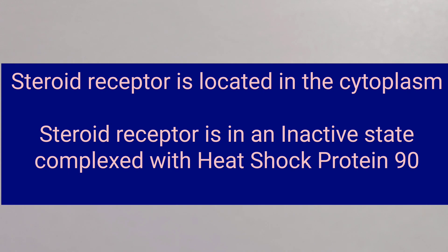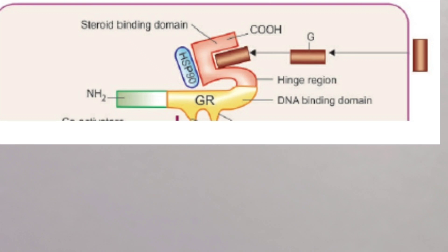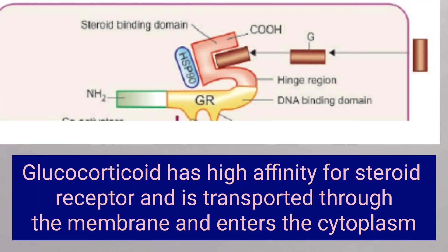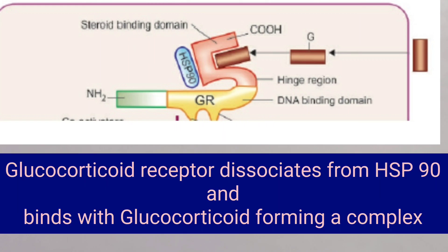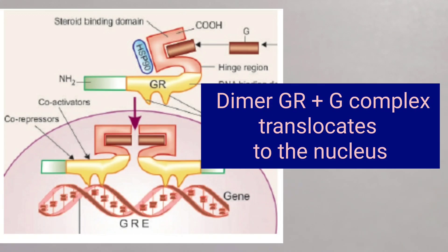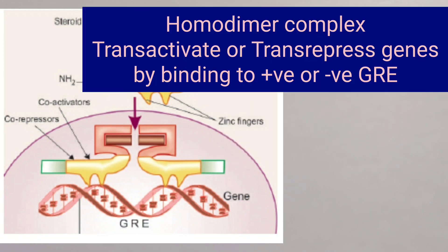The steroid receptor is located in the cytoplasm and is present in an inactive state complexed with heat shock protein 90. Glucocorticoid, which has high affinity for the steroid receptor, is transported through the membrane and enters into the cytoplasm. The steroid receptor then dissociates from heat shock protein 90 and binds with glucocorticoid to form a complex. The dimer — the glucocorticoid receptor and glucocorticoid complex — then translocates into the nucleus.